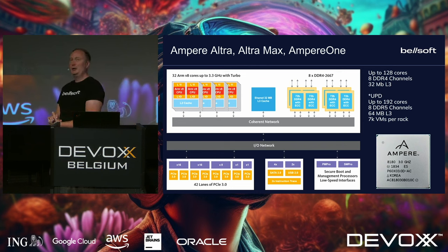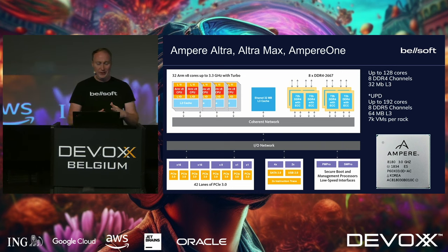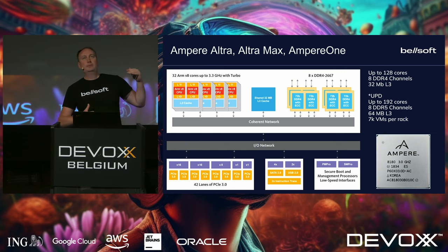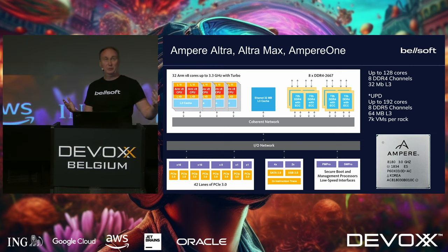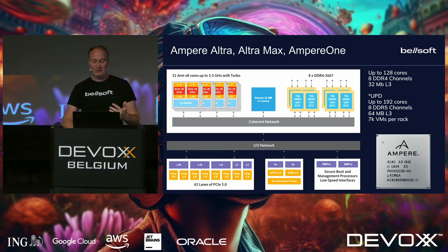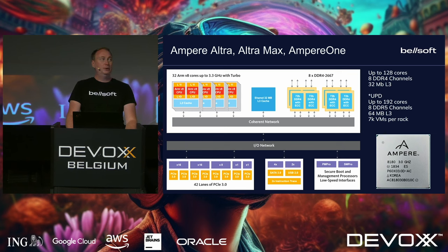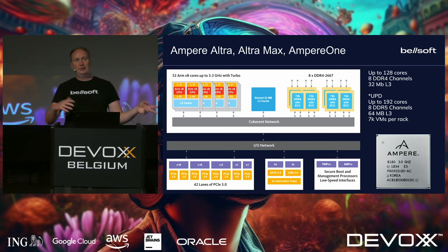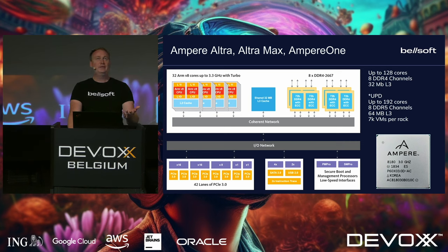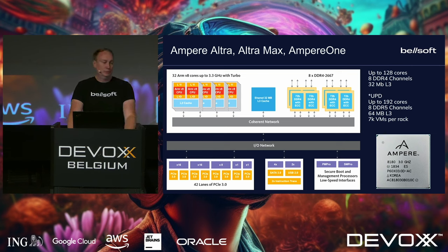For our server-side applications, this is an old picture showing how Ampere chip generations evolved. The first gen was good, but the very recent ones are very powerful. You can find this chip in Oracle Cloud, for example. You can buy one — from the first generation or the most recent one — as a computer for your own data center or your desk.